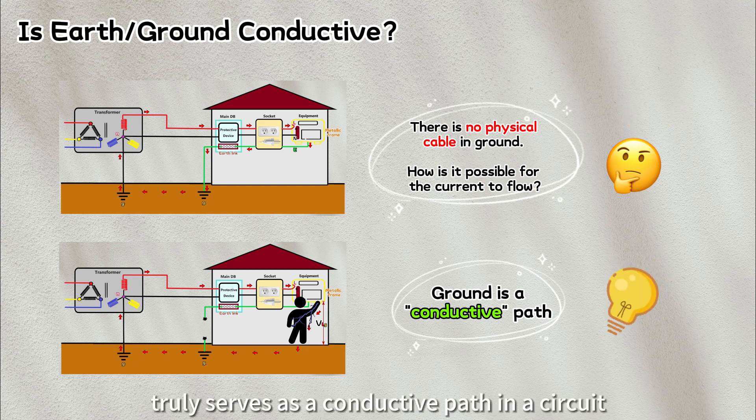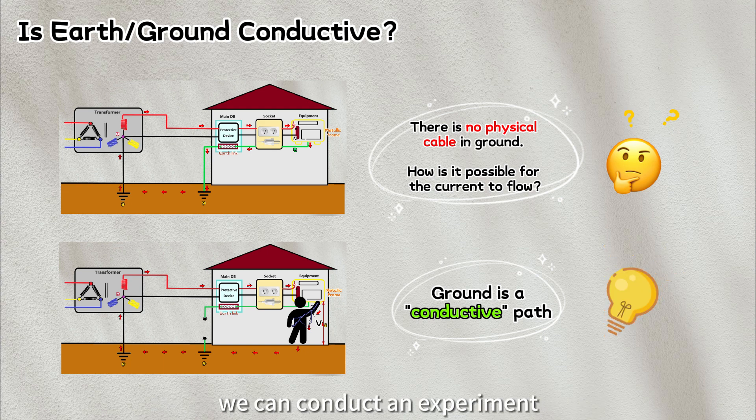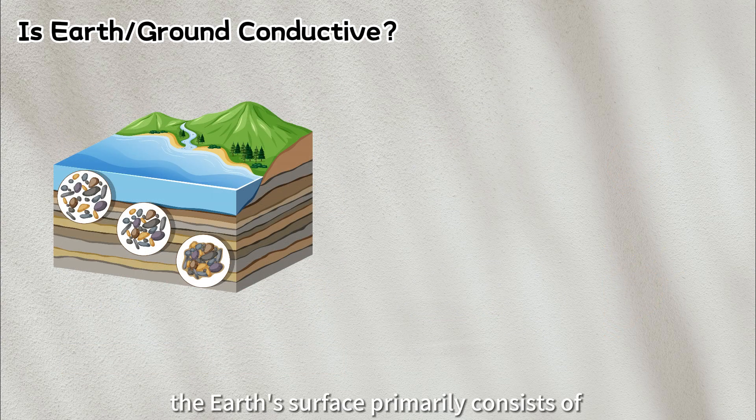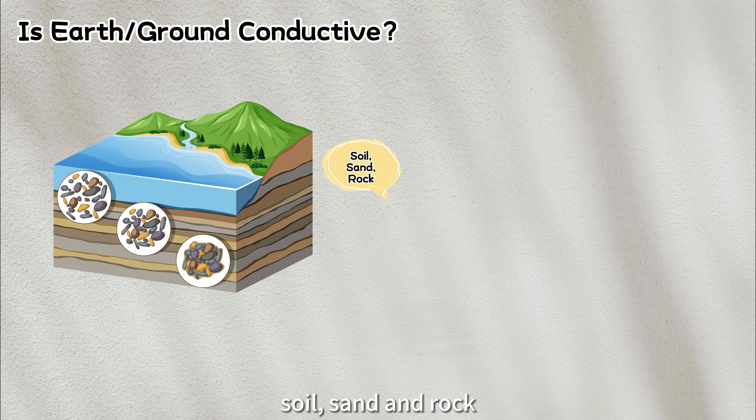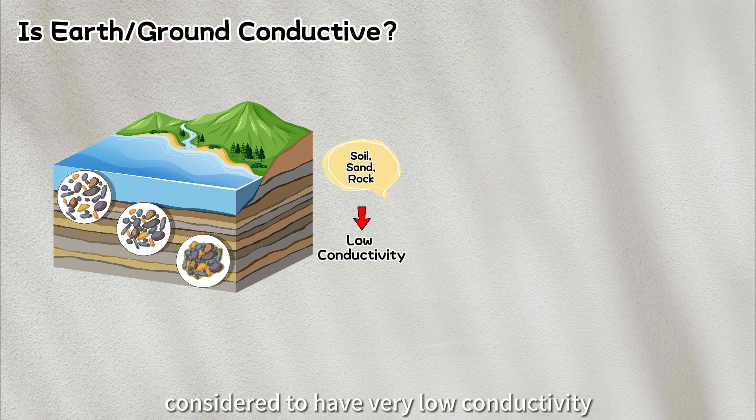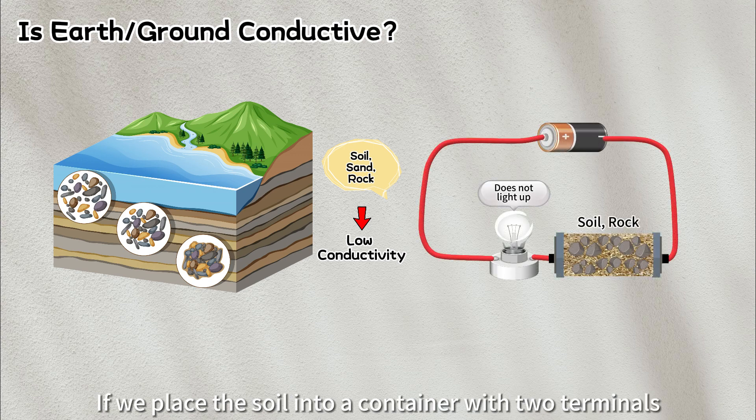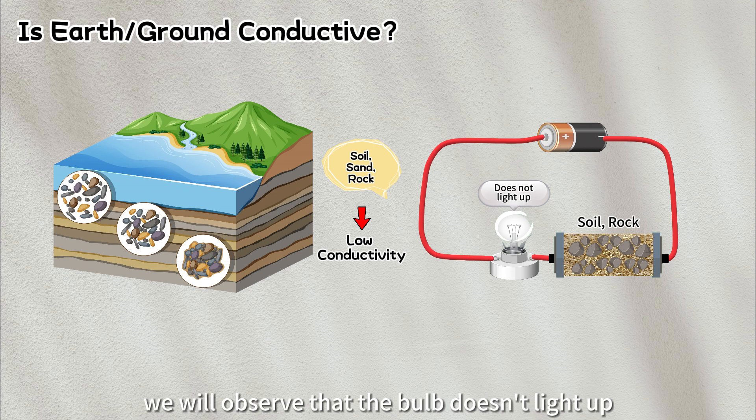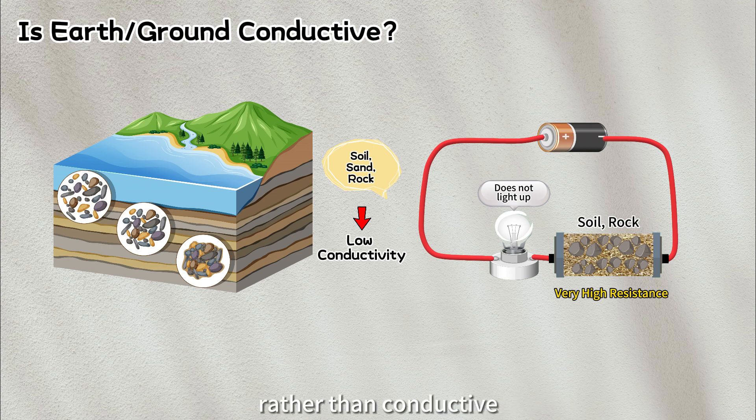To verify whether the soil truly serves as a conductive path in a circuit, we can conduct an experiment. The earth's surface primarily consists of soil, sand, and rock. These materials are typically considered to have very low conductivity. If we place the soil into a container with two terminals and connect it with a battery and a light bulb, we will observe that the bulb doesn't light up. The soils appear to be more insulative rather than conductive, exhibiting very high resistance.